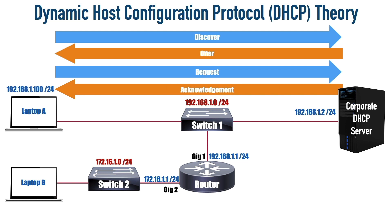Laptop A just got assigned 192.168.1.100 with a 24-bit subnet mask. The four steps are: discover, offer, request, acknowledgement. The memory aid I'd like to offer you is Dora the Explorer — that Nickelodeon show. The D in Dora reminds me of discover, the O of offer, R of request, and A of acknowledgement. D-O-R-A: discover, offer, request, acknowledgement.